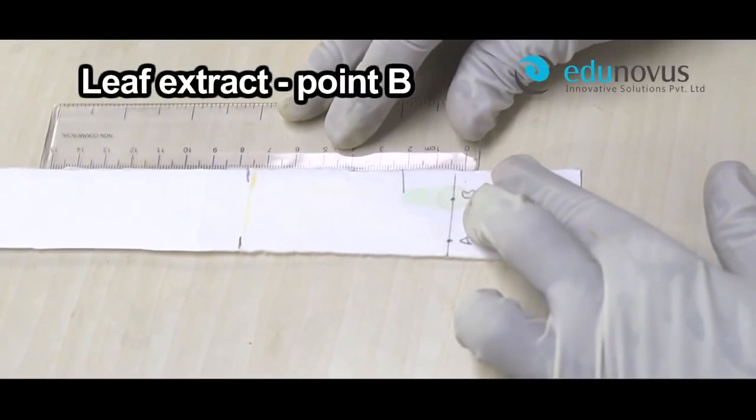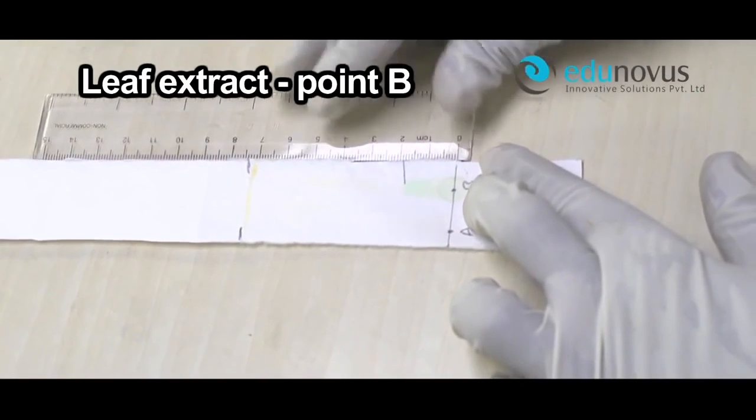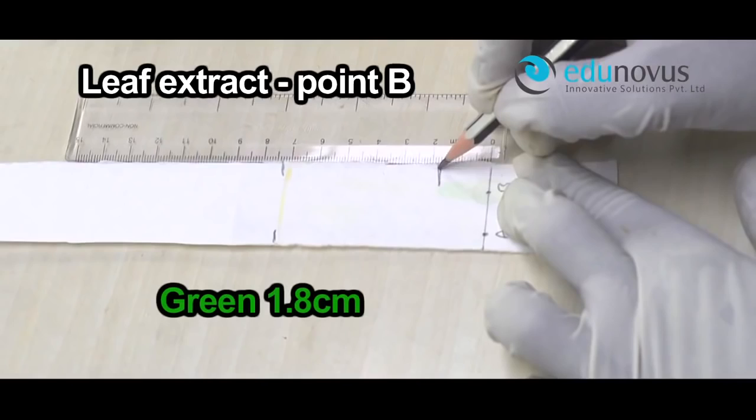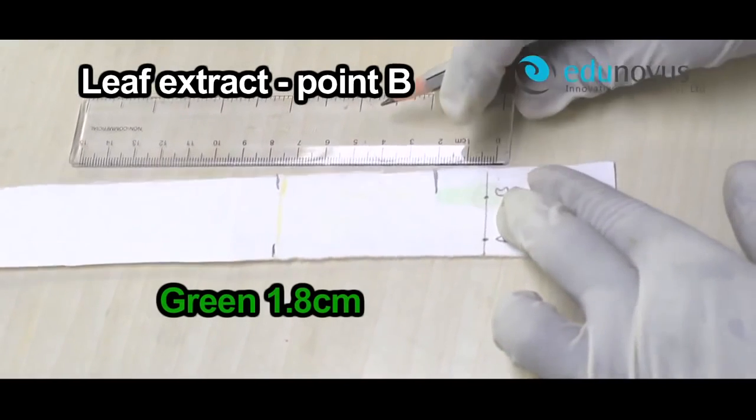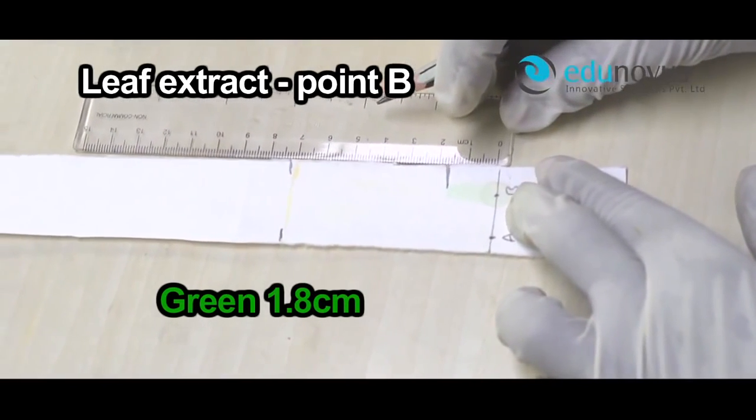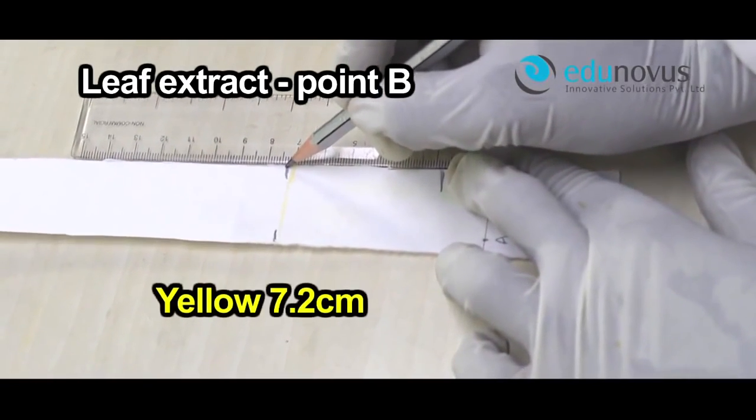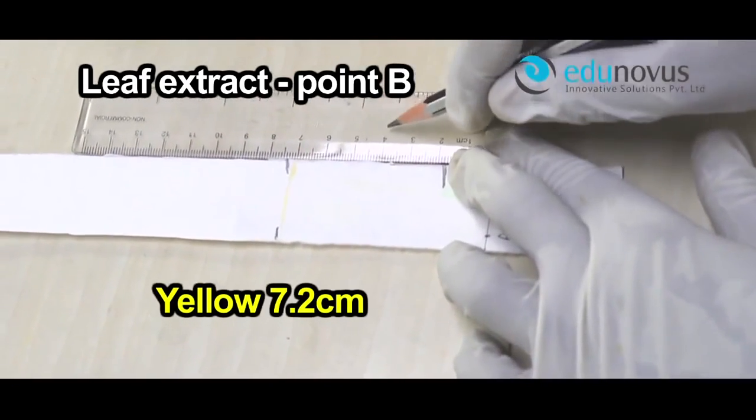In the case of leaf extract point B, we find two color spots: yellow and green. The distance traveled by the green spot is 1.8 cm. The distance traveled by the yellow spot is 7.2 cm.